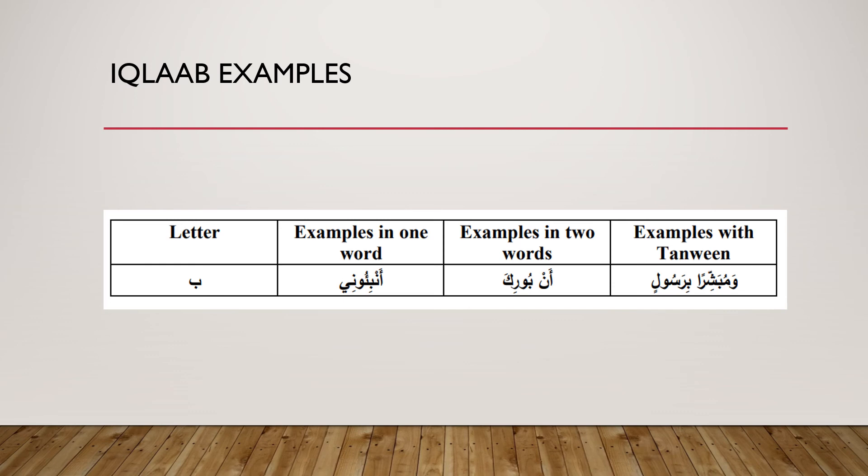The iqlab can occur in one word, between two words, and also with the tanween. Examples: 'anbi'uni', 'anburika', 'wa mubash-shiran bi-rasuli'.